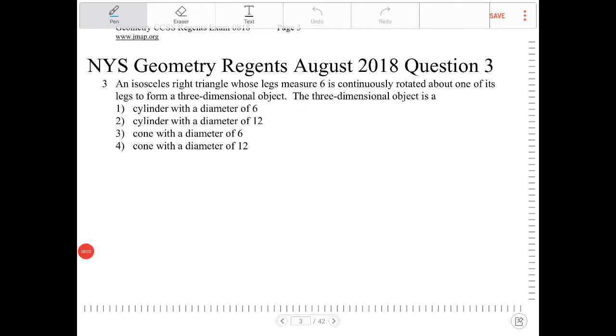An isosceles right triangle whose legs measure six is continuously rotated about one of its legs to form a three-dimensional object. The three-dimensional object is...